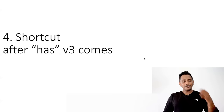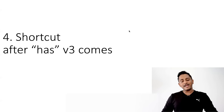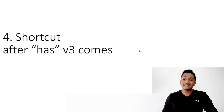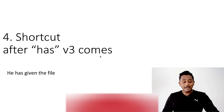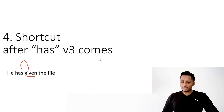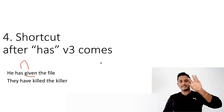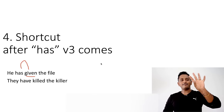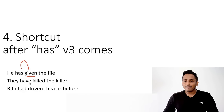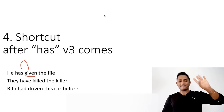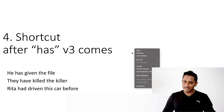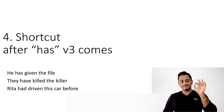Shortcut number four: after 'has' or 'have', verb three comes. 'He has eaten,' 'they have eaten,' 'they have developed,' 'he has given.' Verb forms: eat–ate–eaten, give–give–given, drive–drove–driven. If there is a blank after 'has' or 'have', select the past participle option.